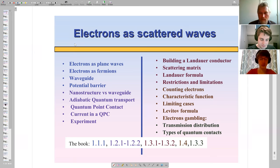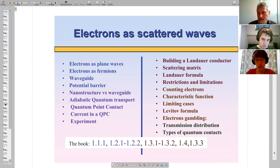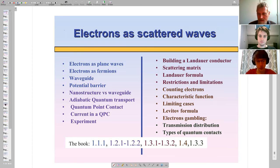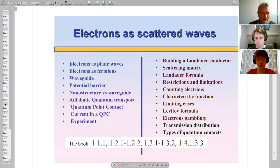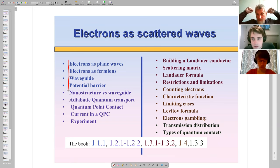Let us start the course. First of all, I'd like to talk about electrons as quantum waves — the important message that electrons scatter as waves, which actually defines quantum transport. I guess it's the most important lecture in the whole course. We will repeat quantum mechanics: electrons as plane waves, as fermions; we'll talk about potential barriers and waveguides, then turn to other structures.